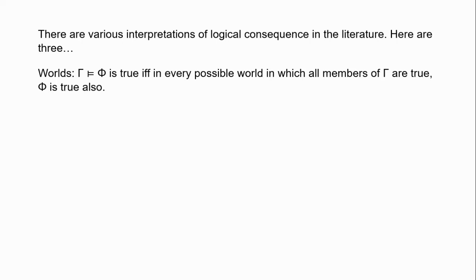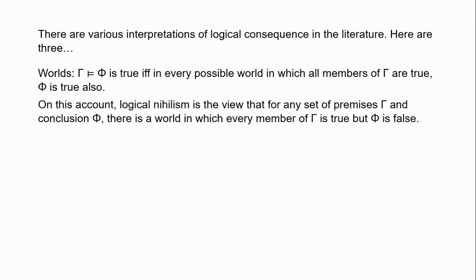First, there is the worlds account. On this account, gamma entails phi is true if and only if, in every possible world in which all the members of gamma are true, phi is true also. One major problem is that there appear to be necessary truths true in all possible worlds which we wouldn't want to think of as logical truths — for example, 'the morning star is the evening star' or 'water is H2O.' On this account, logical nihilism is the view that for any gamma and phi there is a world in which every member of gamma is true but phi is not.